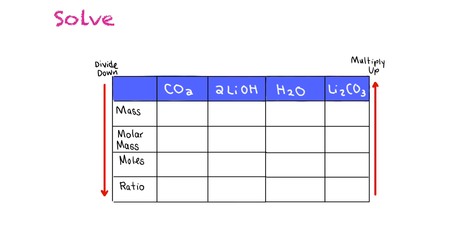This table shows how to solve for mass relationships. The columns are the reactants and products — CO₂, LiOH, H₂O, and Li₂CO₃. Down the side we have mass, molar mass, moles, and mole ratio. In these tables, you divide down and multiply up: take your mass, divide by molar mass to get moles, then divide by the coefficient for the mole ratio. Take that across, multiply by the other coefficient to get moles, then multiply by molar mass to get mass.